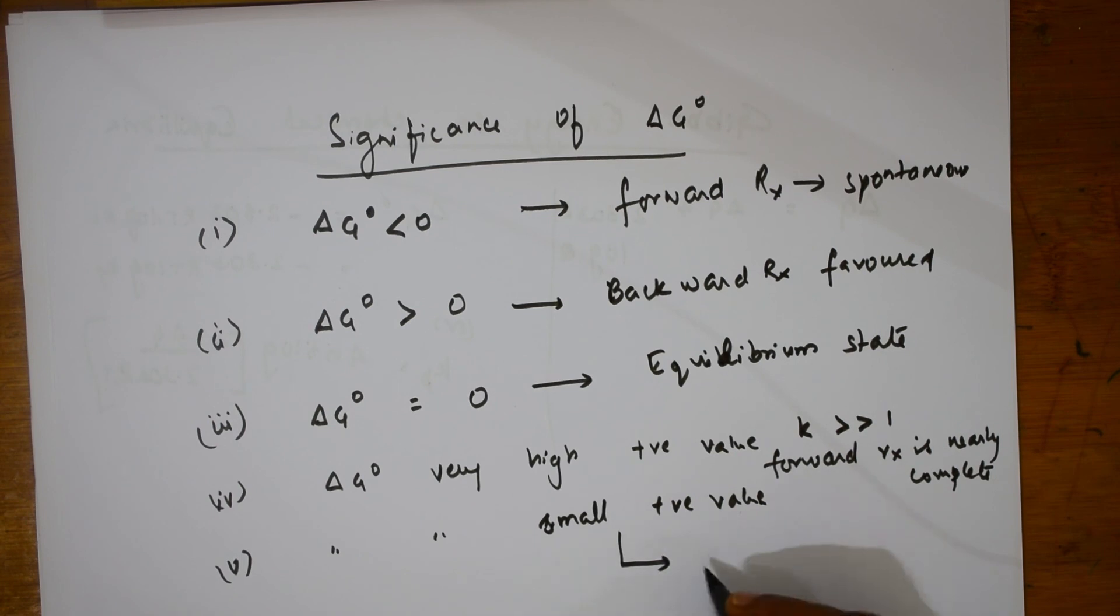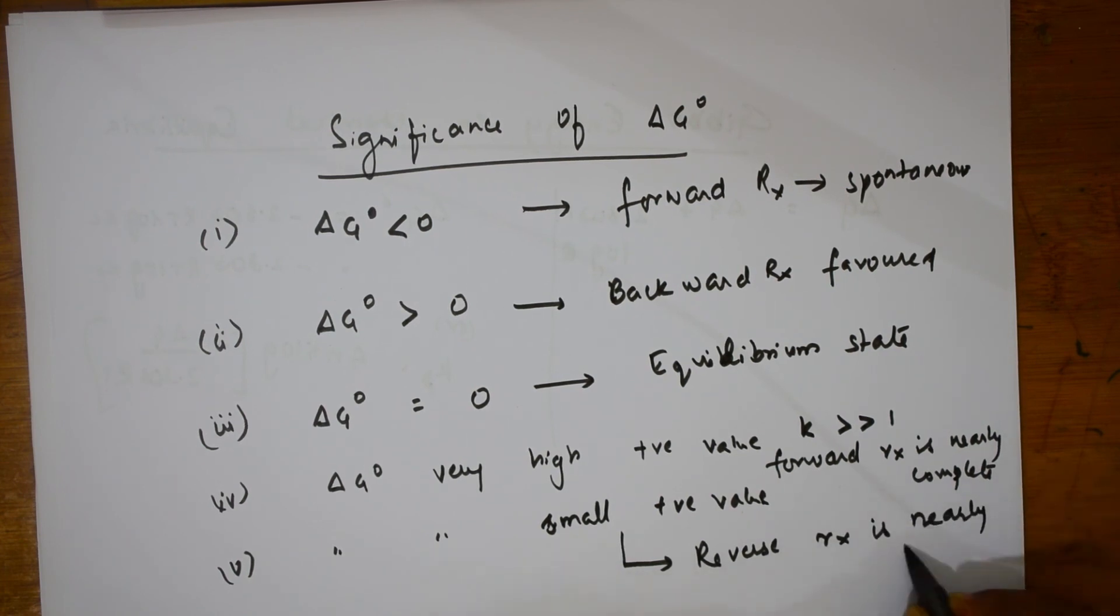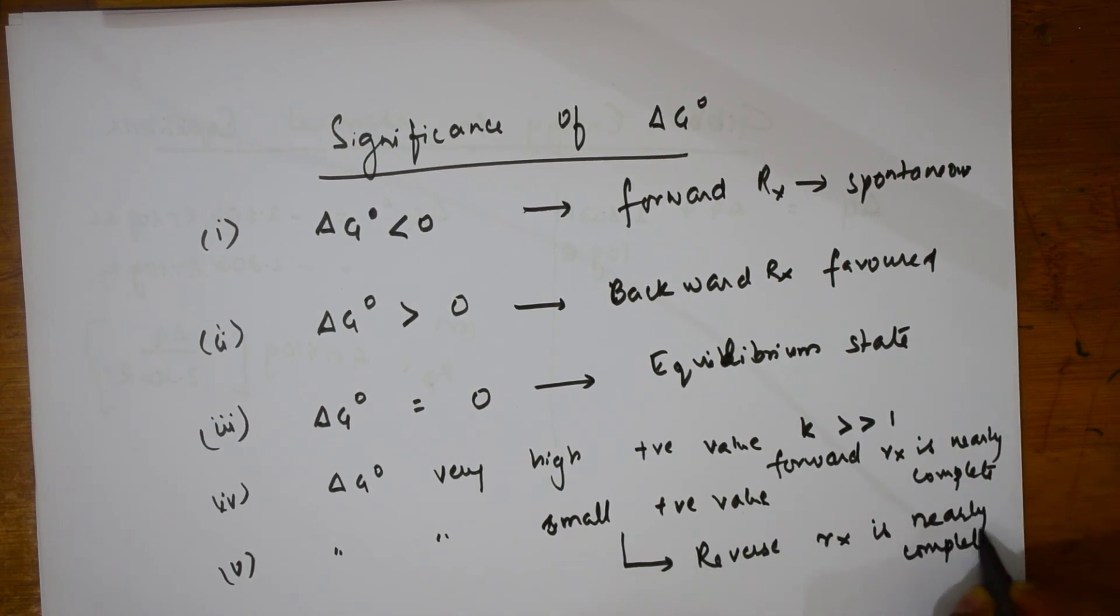If it is a very small positive value, that means the reverse reaction is nearly complete. This is what you have to remember with Gibbs free energy. These are the cases which you need to remember.